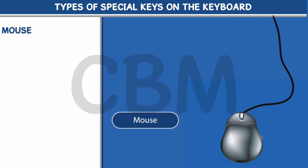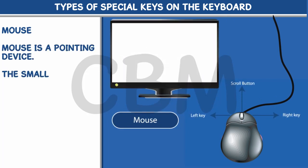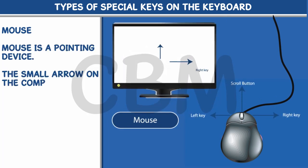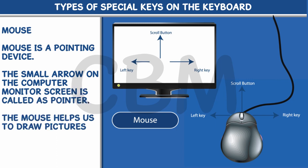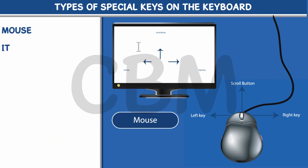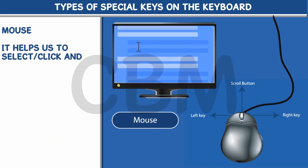Mouse. Mouse is a pointing device. The small arrow on the computer monitor screen is called a pointer. The mouse helps us to draw pictures and play games on the computer. It helps us to select, click and open programs.